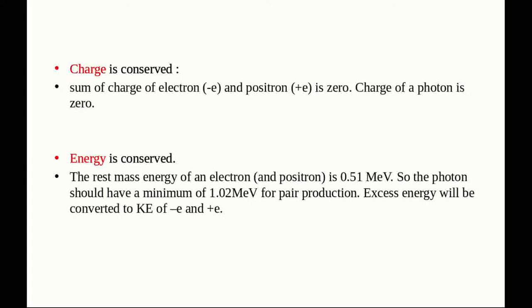If the photon has exactly 1.02 MeV, what energy is left for the electron and positron kinetic energy? Zero. If the photon has more than 1.02 MeV, the excess energy will be converted to the kinetic energy of the electron and positron, shared equally between them.